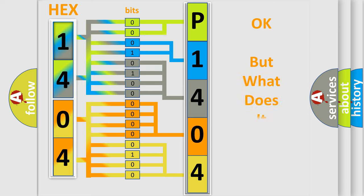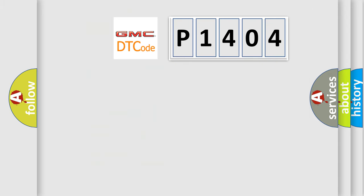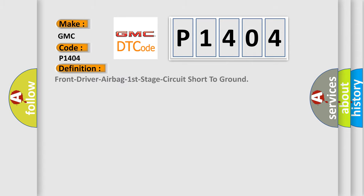We now know how the diagnostic tool translates the received information into a more comprehensible format. The number itself does not make sense if we cannot assign information about what it actually expresses. So, what does the diagnostic trouble code P1404 interpret specifically for GMC car manufacturers? The basic definition is: Front driver airbag stage 1 circuit short to ground.